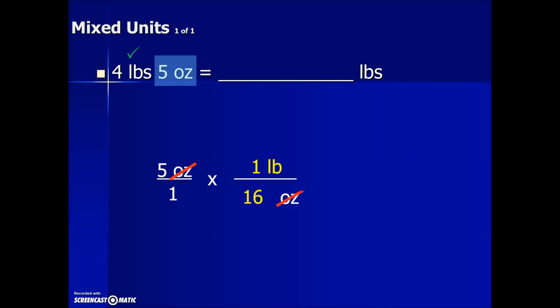Multiplying then, we cancel out common values in the numerator and the denominator. Multiplying numerator values, we get a five. Multiplying denominator values, we get a 16. 5 divided by 16 to replace the fraction with a decimal equivalency. We end up with 0.3125 pounds.